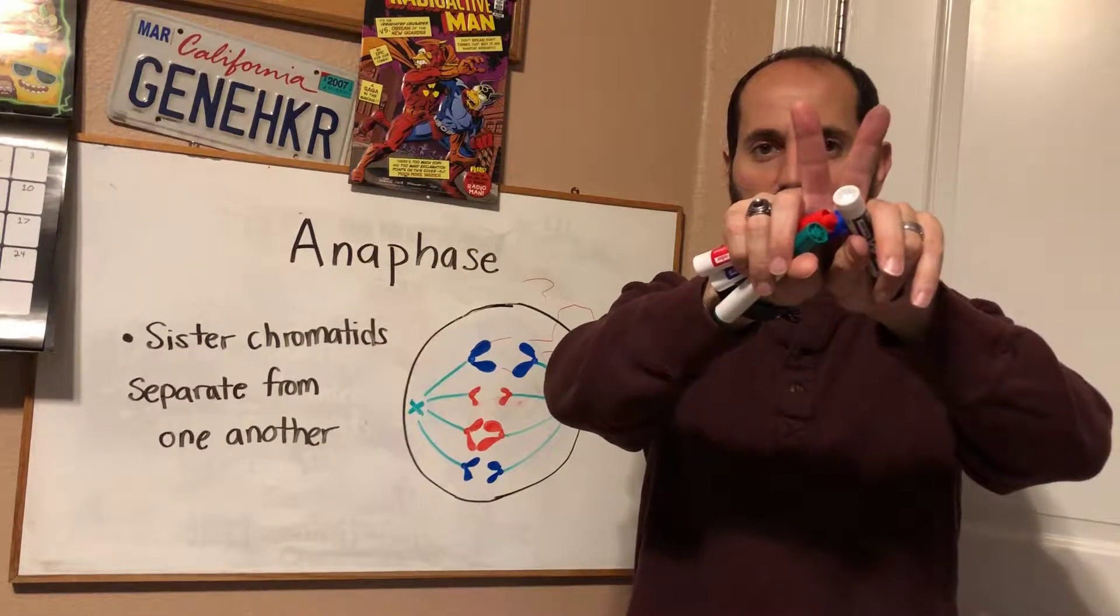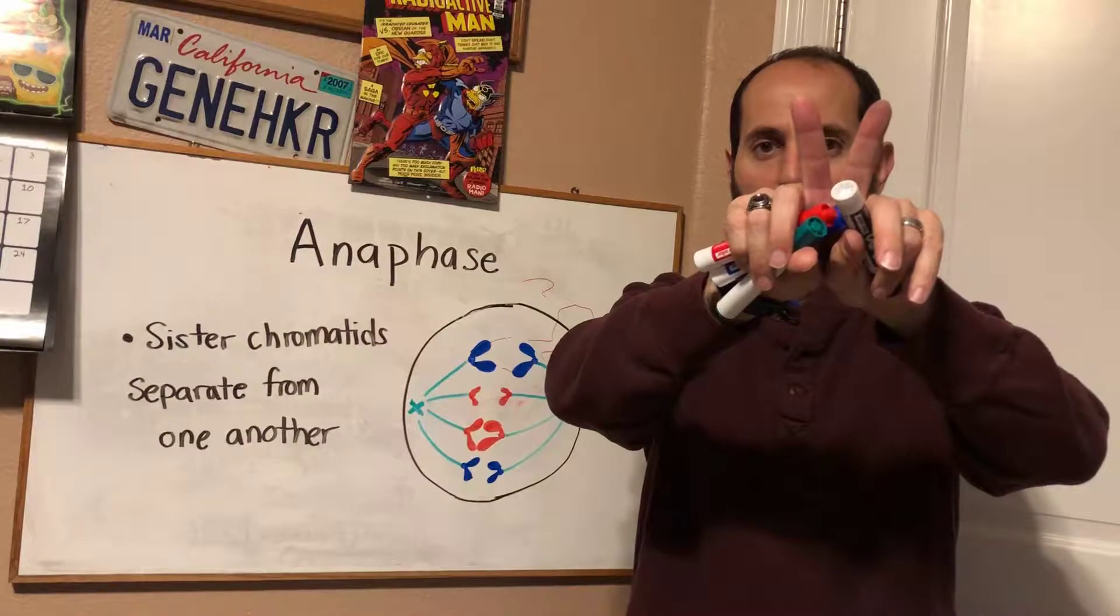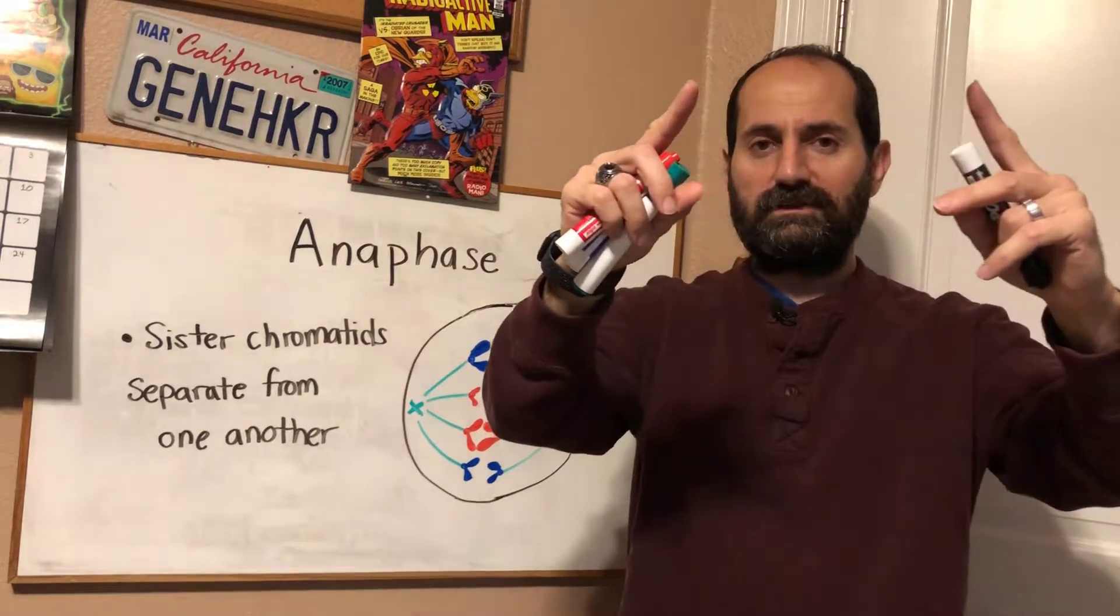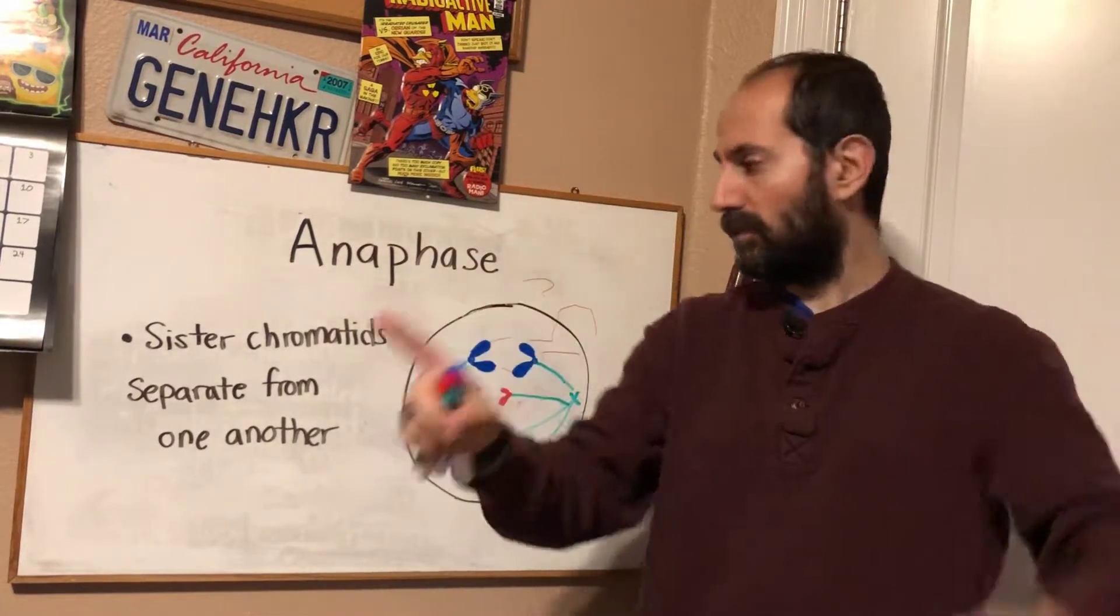During anaphase, the cohesin proteins holding them together let go, and the sisters move to opposite poles of the cell.